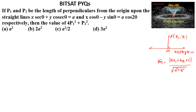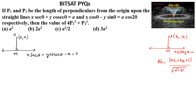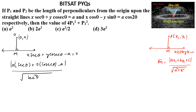Using this formula, the perpendicular distance from the origin to the line x·secθ + y·cscθ - a = 0 gives us p1 = |0·secθ + 0·cscθ - a| / √(sec²θ + csc²θ), which equals |−a| / √(sec²θ + csc²θ).